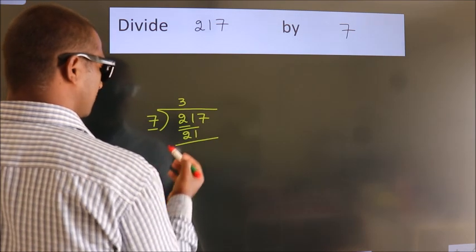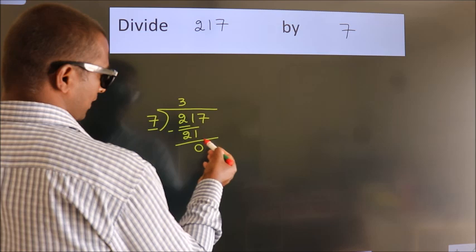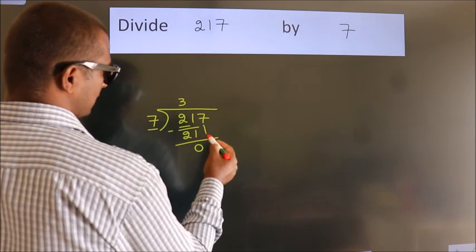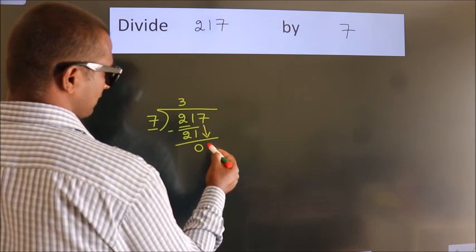Now we should subtract. We get 0. After this, bring down the beside number. So 7 down.